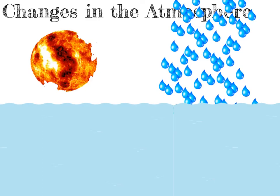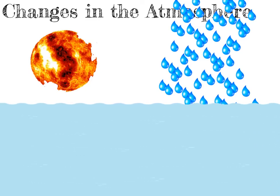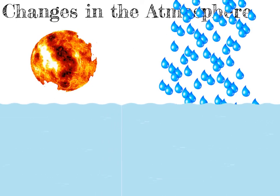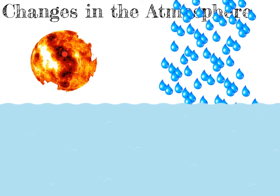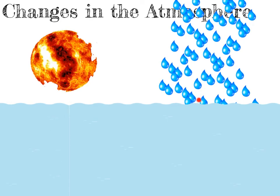This is the first part in our story of how the atmosphere changed from having a lot of water vapour to very little water vapour. The key ideas are that the Earth was very hot, the temperature cooled down, the water vapour in the atmosphere condensed, fell to the Earth as rain, and formed our oceans.